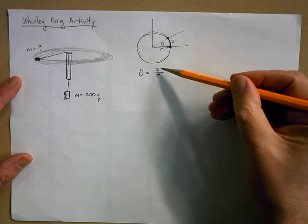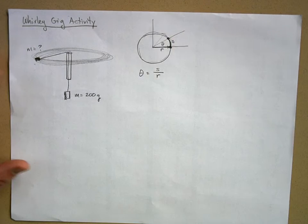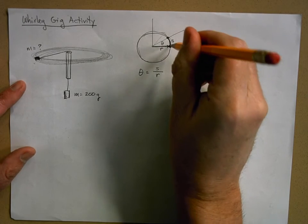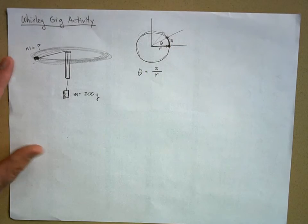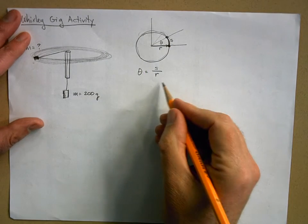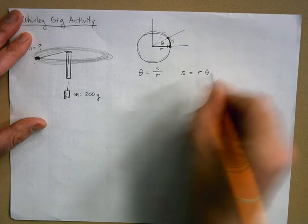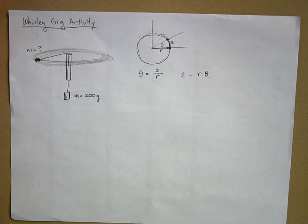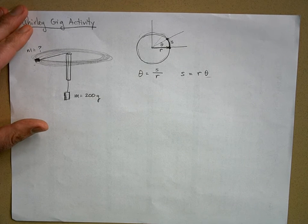If the arc length equals the radius, that's one radian of angle. So a radian is really asking: how many radiuses fit along the arc? This lets us figure out arc length if we know the radius, by rearranging theta equals s over r to get s equals r times theta.